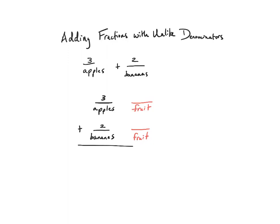Unlike the more abstract problems I'm going to show you, here I don't need to change anything about the numerator or split it into more equal parts. I can just leave it as three and two. This is not a perfect analogy, but it does let you see that when adding two unlike items, I must find something that they have in common. So I have three fruit and two fruit, which gives me five fruit.